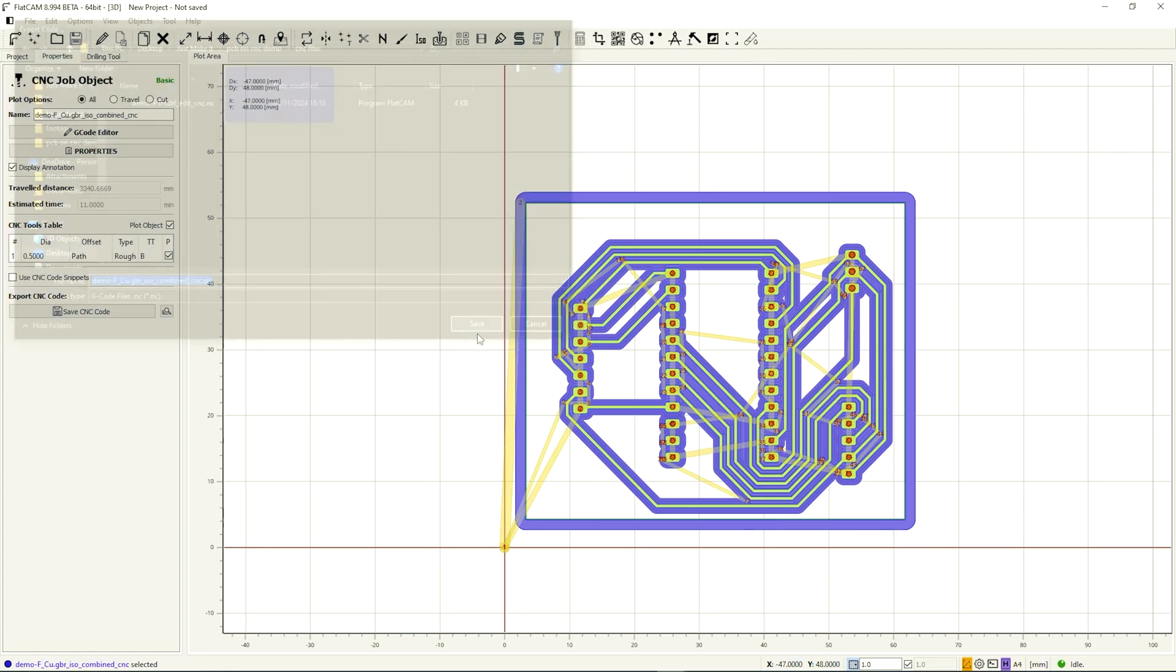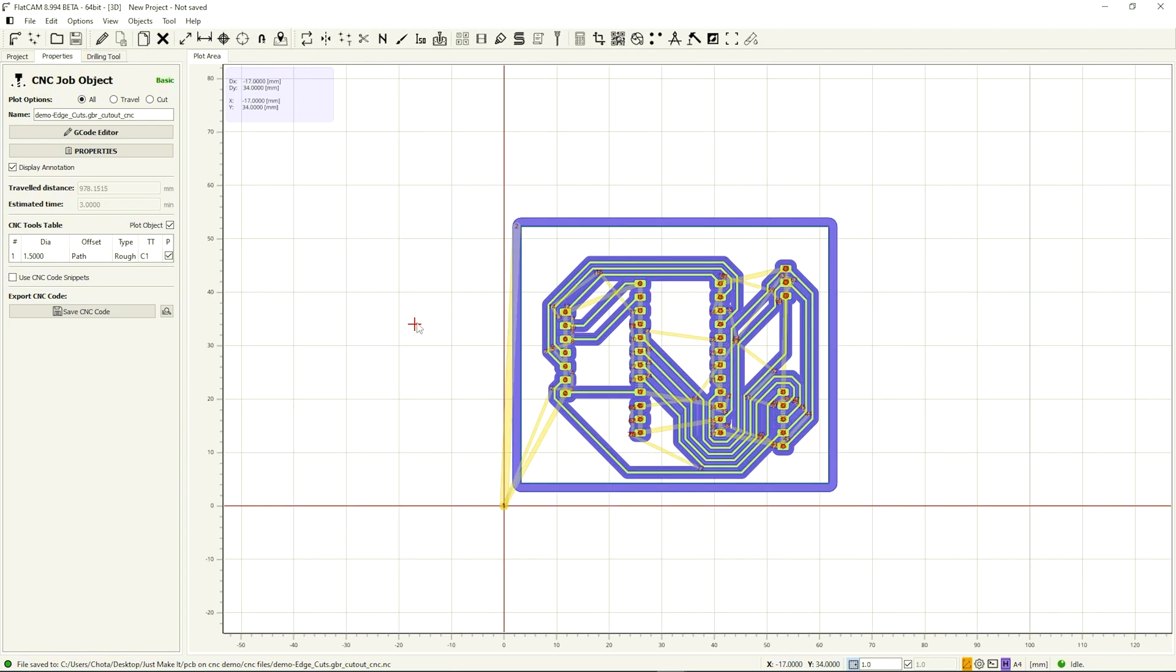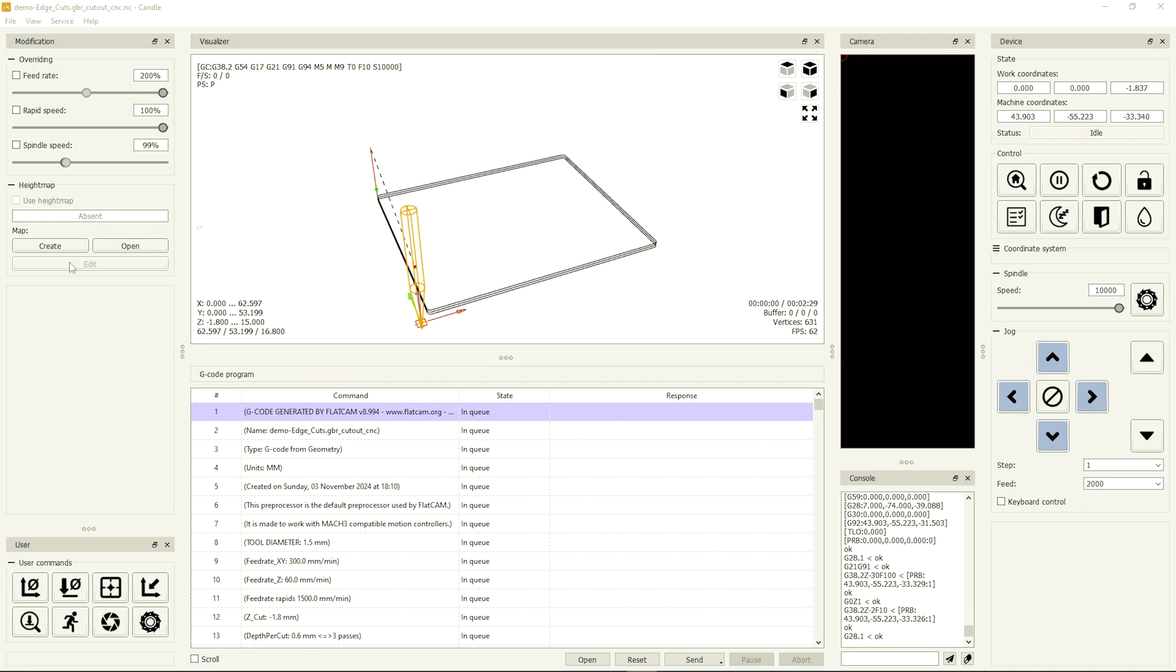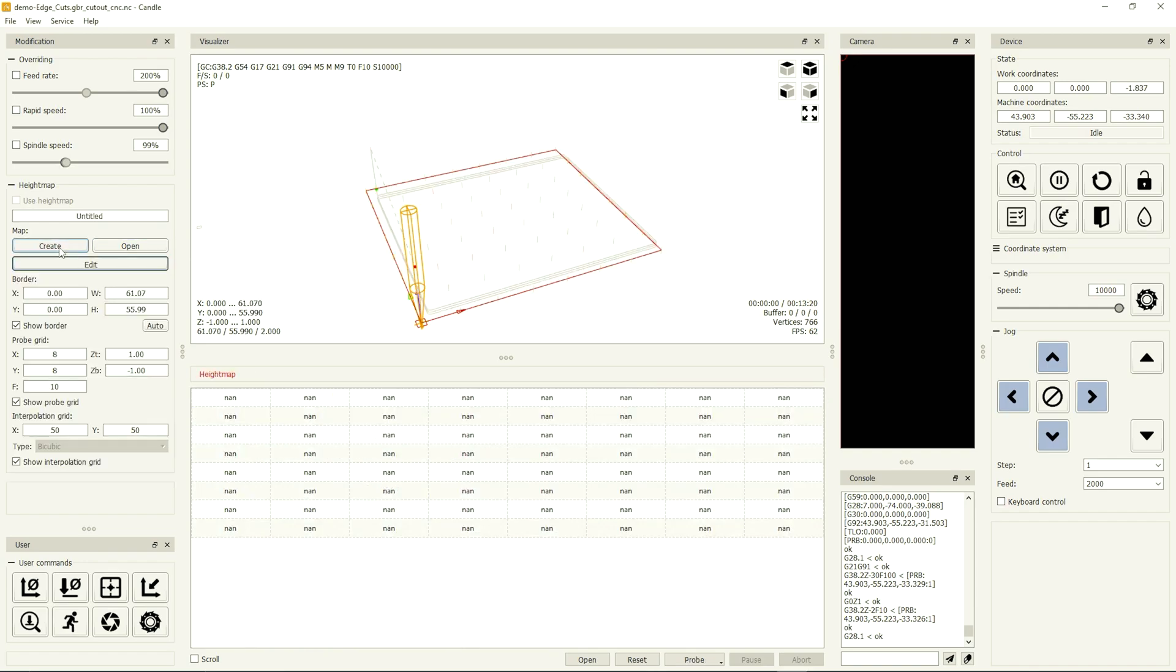Once I generated CNC jobs for the isolation paths, the cut out, and obviously the drill holes, I was able to export the G-code ready to send to our CNC machine. The last software we're going to be using to make this PCB is called Candle and it's what we use to send the G-code over to the CNC.